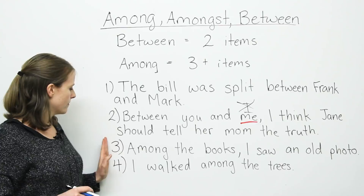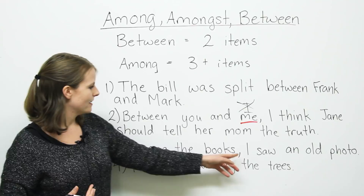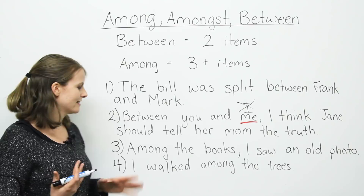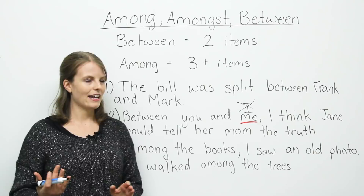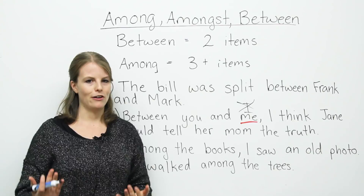In our third example we're using among: 'Among the books, I saw an old photo.' So books — there's more than two in this case; I'm talking about more than two books. Another sentence: 'I walked among the trees.' Now we're going to look at when this rule — two items versus three or more items — does not apply, when this rule doesn't work.